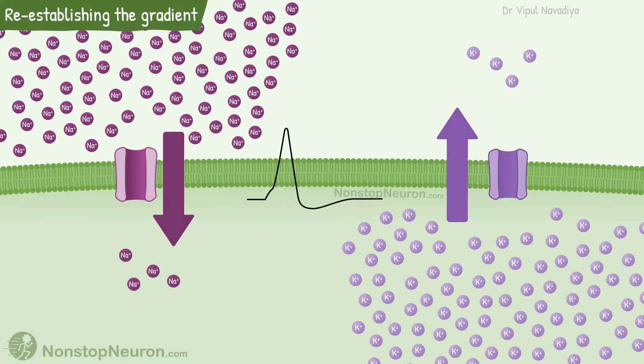So, with repeated stimuli, it becomes necessary to restore the gradient nonetheless. This is done by ongoing activity of sodium potassium ATPase pump as we have already seen.